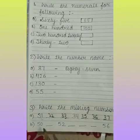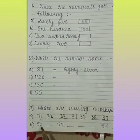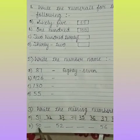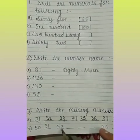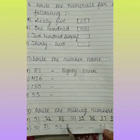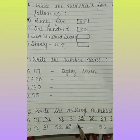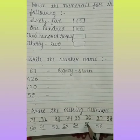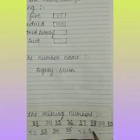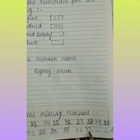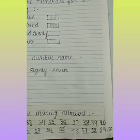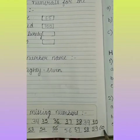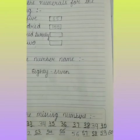B starts at 50. We have to count from 50: 51, 52, 53, 54, 55, 56 is already given, then 57, 58, 59, and the last digit is 60.